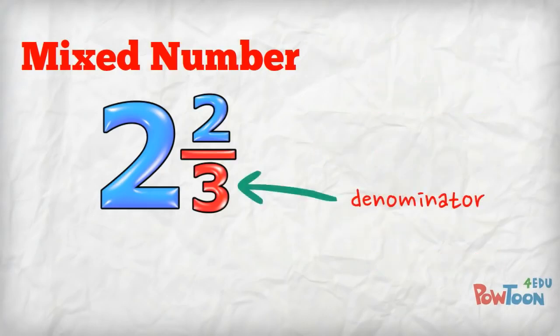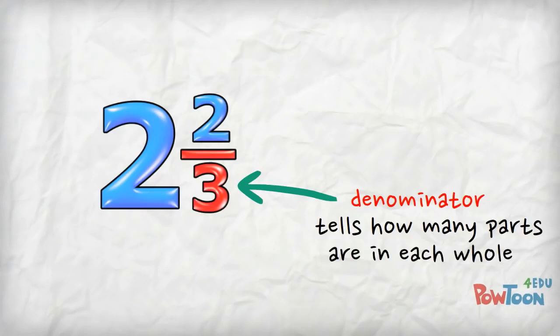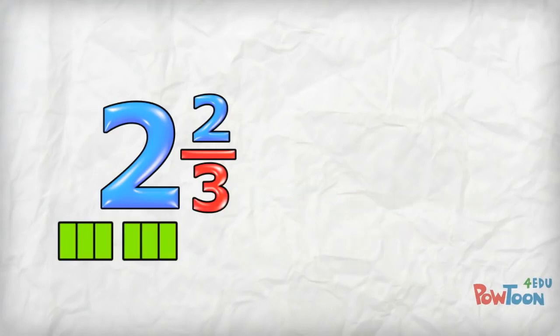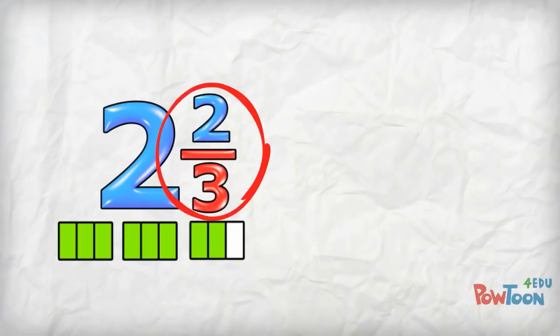The denominator tells us how many parts are in each whole. A denominator of 3 means that each whole has 3 parts. And we have 2 wholes. This fractional part tells us that we have 2 parts out of 3.